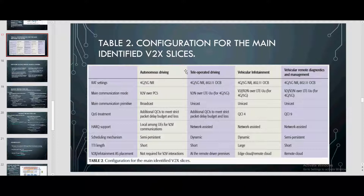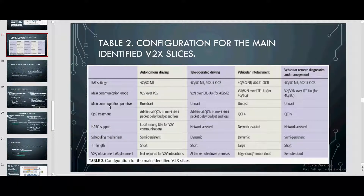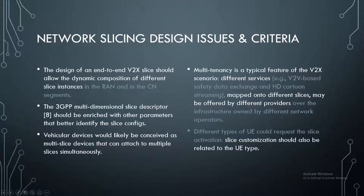For the teledriving slice, an application server is required. For the main communication primitive: teledriving uses unicast, while autonomous driving uses broadcast. Each slice has a specific RAT support type. For autonomous driving, additional RAT support is not needed. For TTI configuration, the autonomous driving slice uses short TTIs while others may vary. You may take a snapshot for additional details.